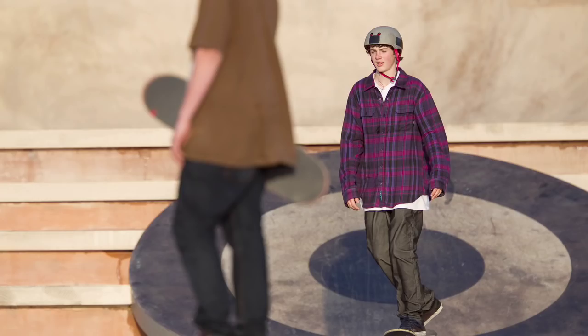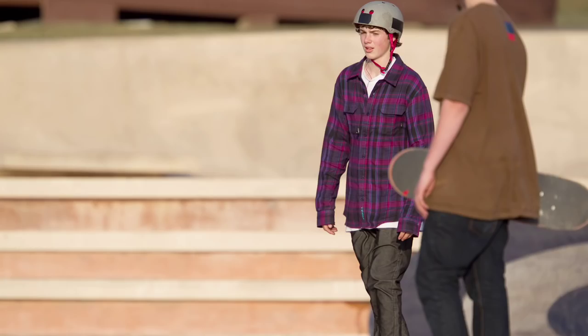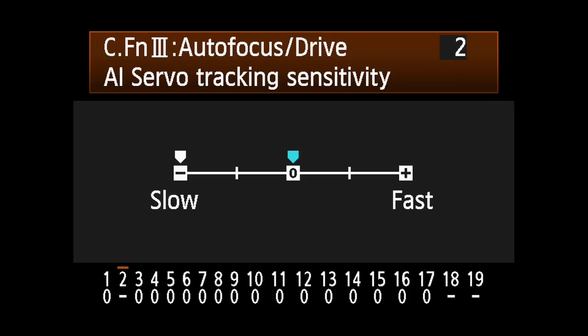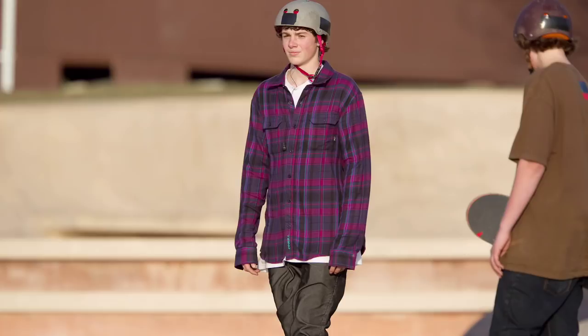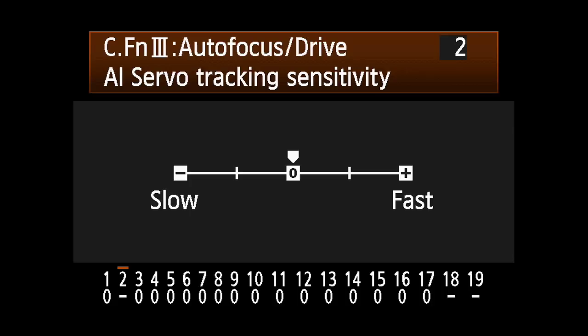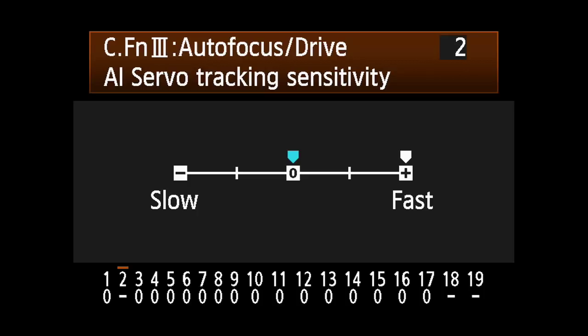When set towards the Slow side, interruptions by other obstacles are less disruptive. Use this to photograph and keep track of one moving subject. When set toward the Fast side, the AF system will refocus faster on any new subject that appears at the active AF point. It's best for quickly shooting different subjects located at random distances.